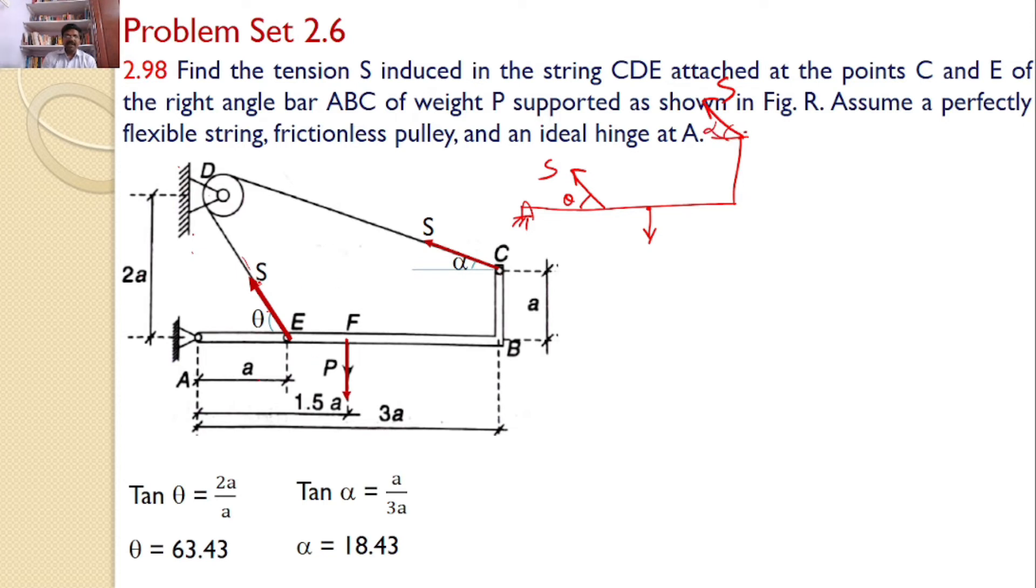Now this S I can resolve into two components. This S also I can resolve into two components. So after resolving this S, I can find this horizontal component is S cos theta, vertical component is S sin theta. Similarly, this S also I can resolve that is S cos alpha and S sin alpha.